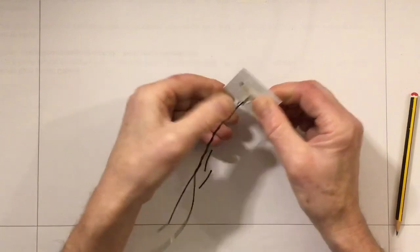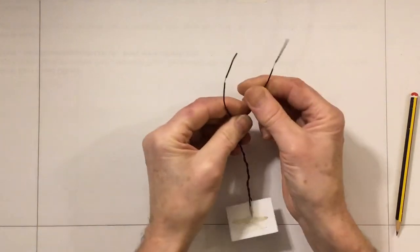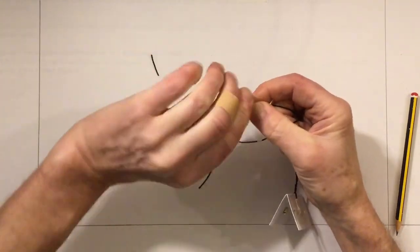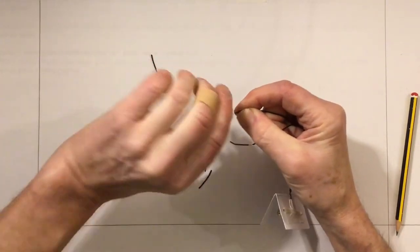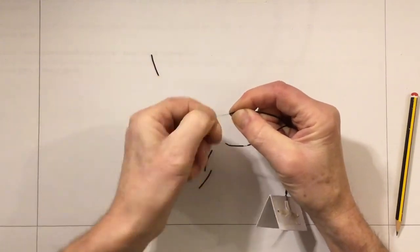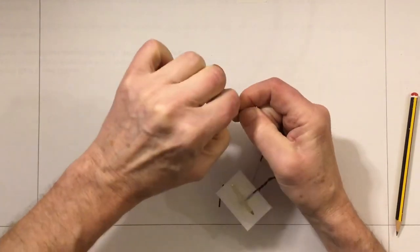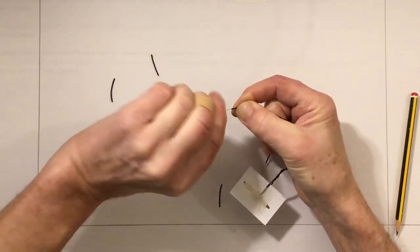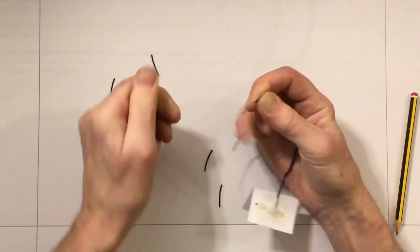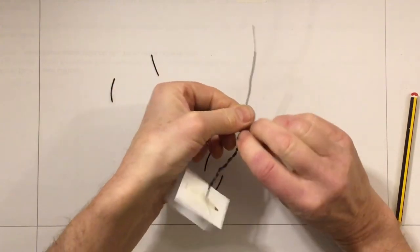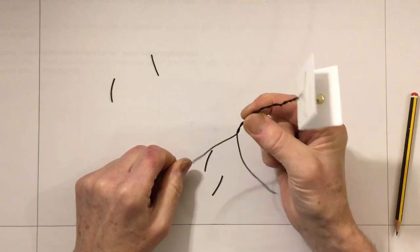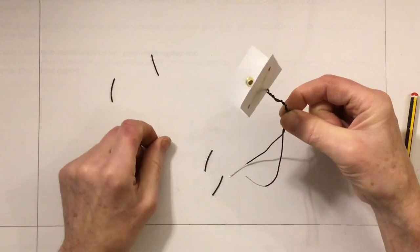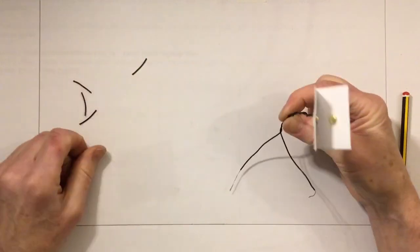And that's our paper clip switch. Now it can't be used just yet because we've got to do the same thing here with those wires. Untwist, sorry, pull off the plastic insulation, then twist the wires so that the strands all come together. There we go. So that's our little paper clip switch which looks a bit like a Venus flytrap insect-eating plant. Fantastic.